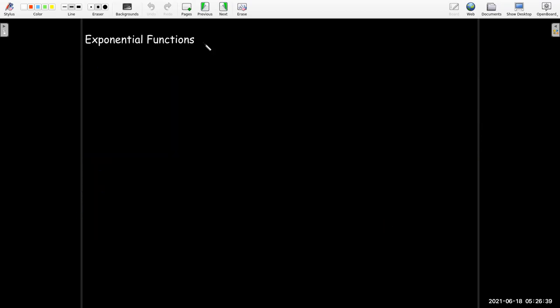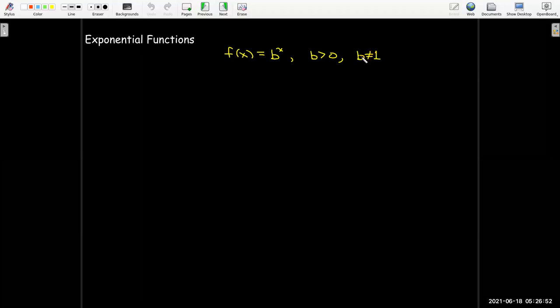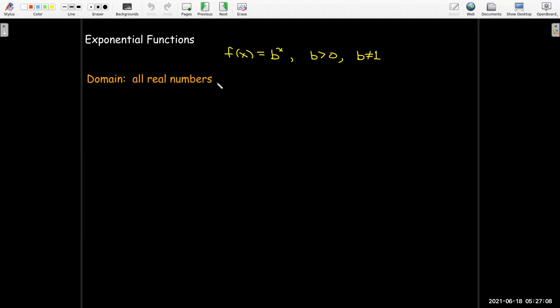So now, with that, we can formally say that if I have a function f of x equals b to the power of x, where b is positive, we're going to leave out 1 as a base because 1 raised to any power is 1. We really want to make this a 1 to 1 function, so our base cannot be 1. We also want to make it have a positive base so that the domain will be all real numbers. You can use any real number as an exponent for a positive base.